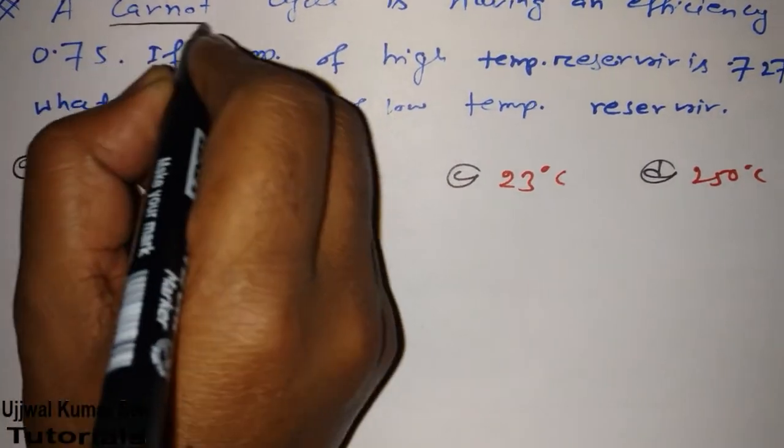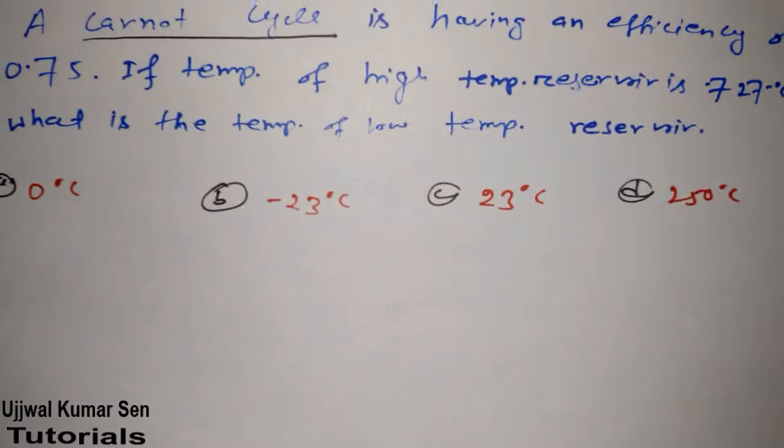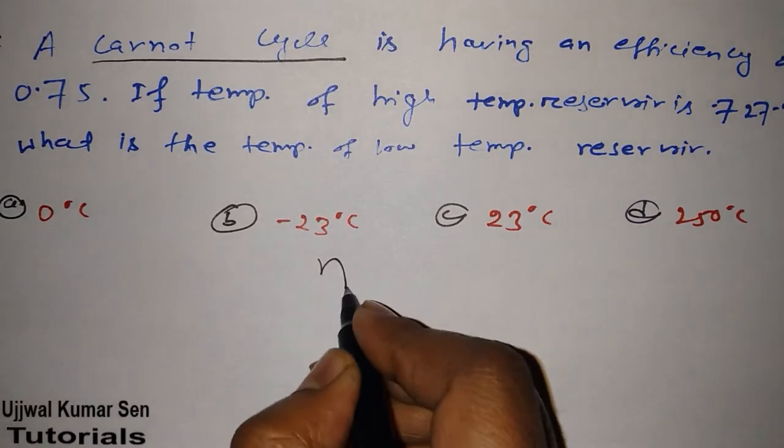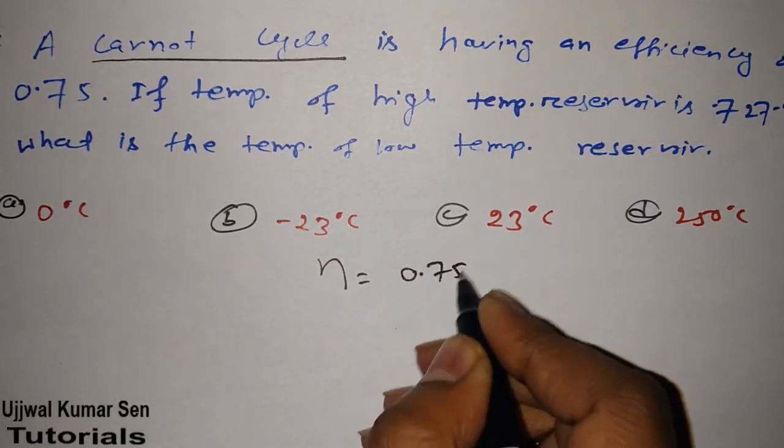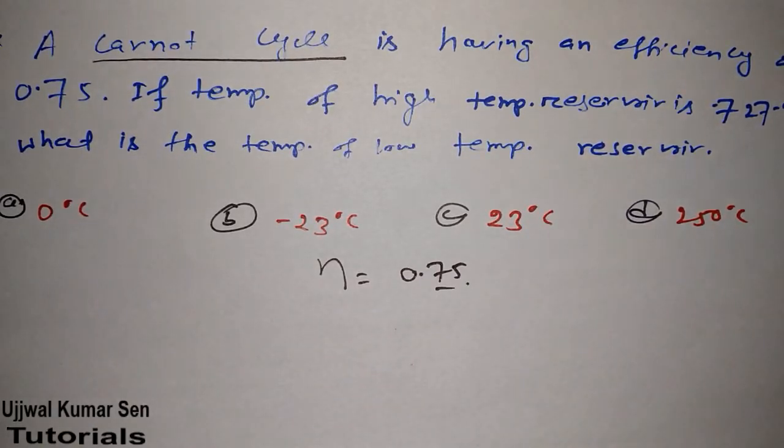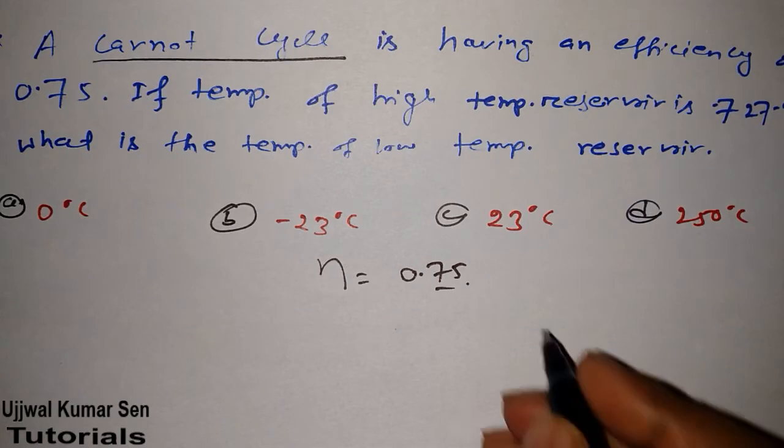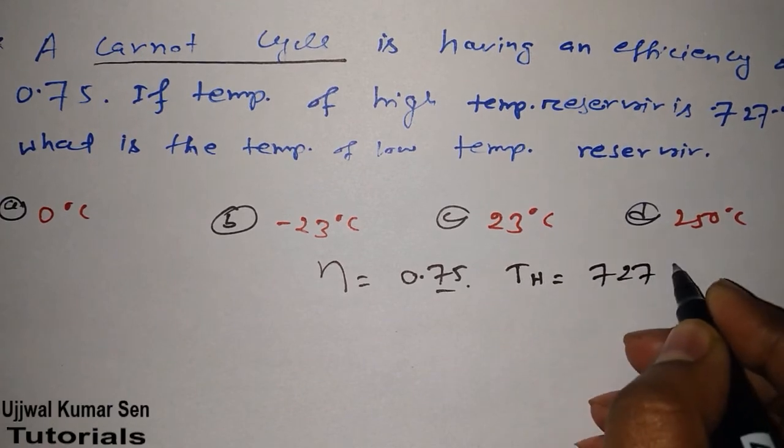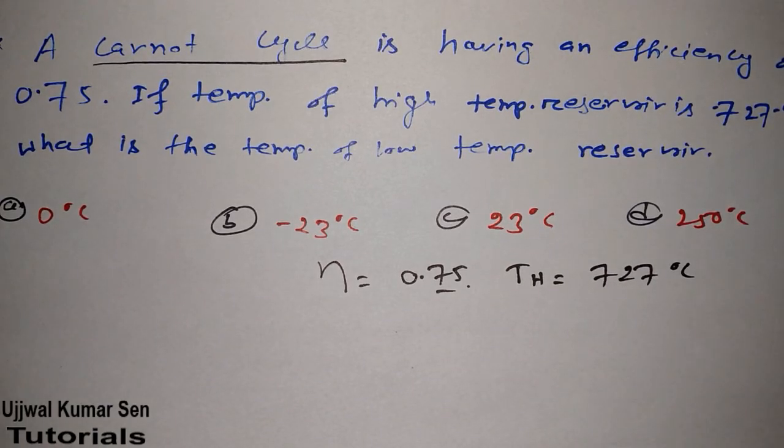This is a question of Carnot cycle. A Carnot cycle is having an efficiency of 0.75. If temperature of high temperature reservoir, TH, is equal to 727 degrees Celsius, what is the temperature of low temperature reservoir TL?